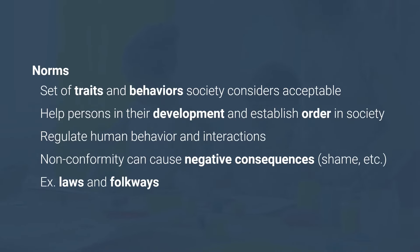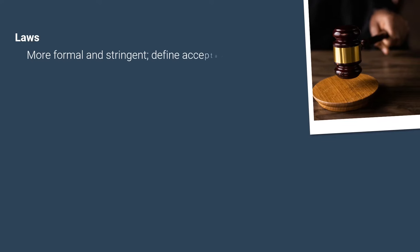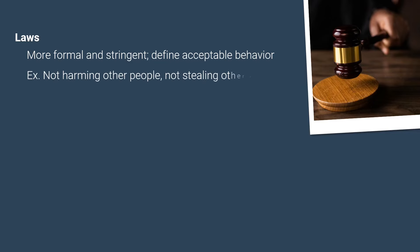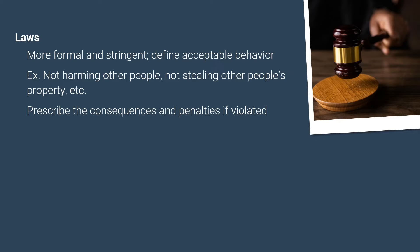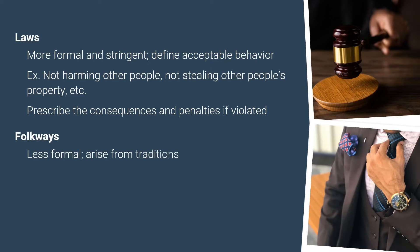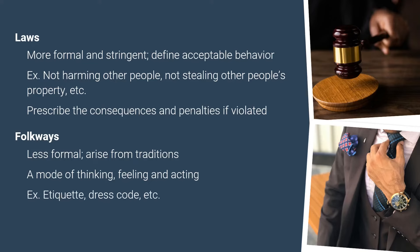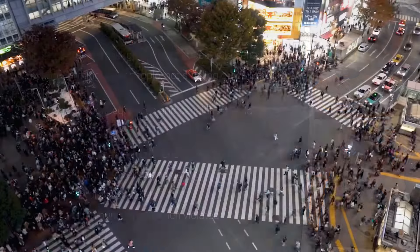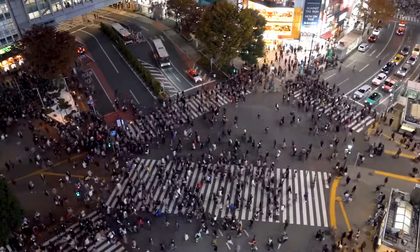Examples of norms are laws and folkways. Laws are more formal and stringent norms that establish and define acceptable behavior of citizens, such as not harming other people or not stealing other people's property. Laws also prescribe the consequences and penalties for those who violate them. Folkways, on the other hand, are less formal norms that arise from traditions — a mode of thinking, feeling and acting common to a group of people, such as the etiquette and dress code of a certain society. Unlike laws, they do not result in punishment when violated. Norms, laws, folkways and other means that regulate human behavior give rise to what is called the social system.